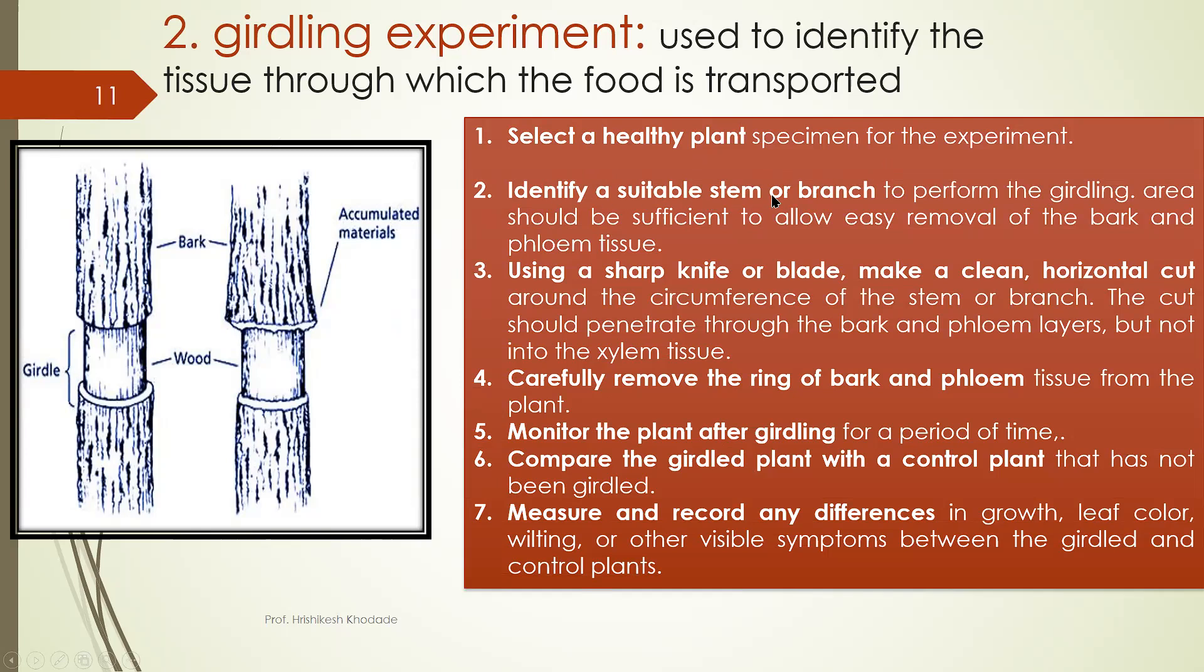What is procedure for this? Select healthy plant. Identify suitable stem means from one plant you have to do this experiment on particular branch. Using sharp knife or blade you have to do this girdle experiment here. Carefully remove the ring bark of the phloem tissue.